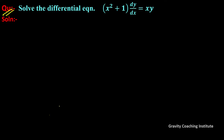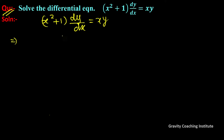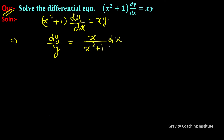Solve the differential equation: (x² + 1) dy/dx = xy. We will check that the variables are separable — and indeed they are easily separable. So we can write dy/y = x/(x² + 1) dx. Now integrating both sides.